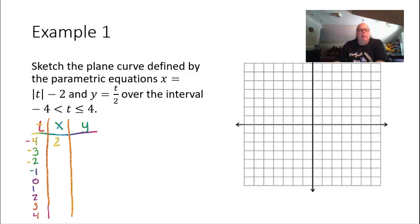The absolute value of negative 3 is positive 3, and 3 minus 2 is 1. The absolute value of negative 2 is positive 2, and 2 minus 2 is 0. The absolute value of negative 1 is positive 1, and 1 minus 2 is negative 1. The absolute value of 0 is 0, and 0 minus 2 is negative 2. The absolute value of 1 is 1, and 1 minus 2 is negative 1. The absolute value of 2 is 2, and 2 minus 2 is 0. The absolute value of 3 is 3, and 3 minus 2 is 1. And the absolute value of 4 is 4, and 4 minus 2 is 2.